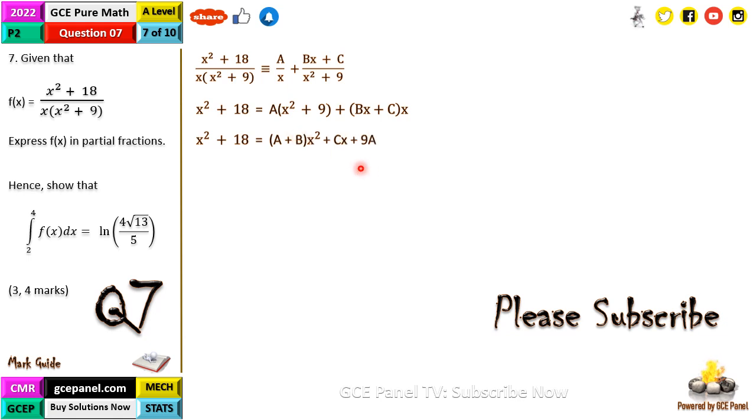I'm going to expand this right-hand side and bring together equations of x squared. We have Ax squared plus Bx squared, so we have (A + B) times x squared, then 9A is a constant and C times x is a polynomial of degree 1. Equating coefficients, we see on the left-hand side the coefficient of x squared is 1, and on the right-hand side it's A + B, so A + B equals 1. The constant on the left-hand side is 18, and on the right-hand side is 9A, so 9A equals 18. The coefficient of x on the right-hand side is C; there's no term in x on the left-hand side, so C equals 0.